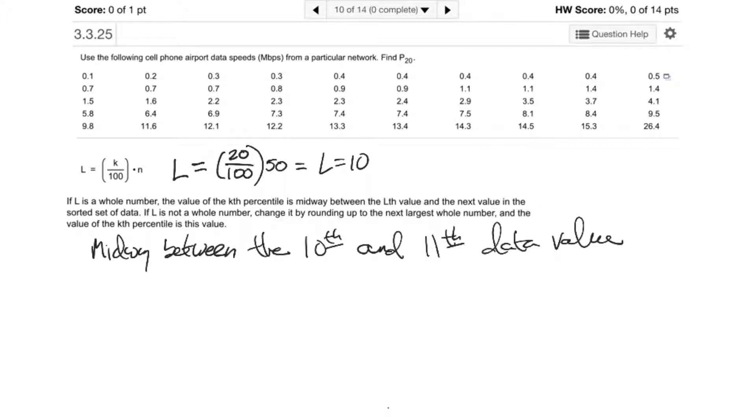So we will count to the 10th and 11th. The 10th data value is 0.5. The 11th data value is 0.7. So we will simply add 0.5 and 0.7 and divide that by 2. This will give us 0.6. So the 20th percentile for this data set would be 0.6.